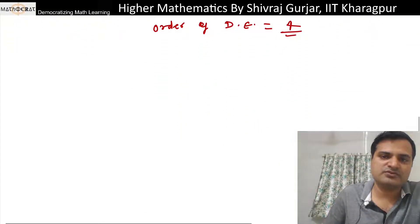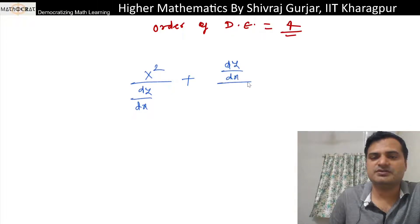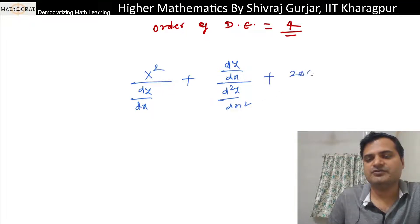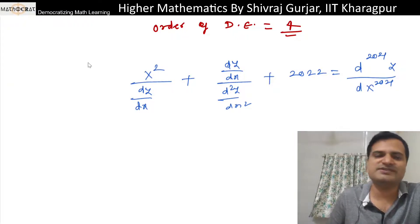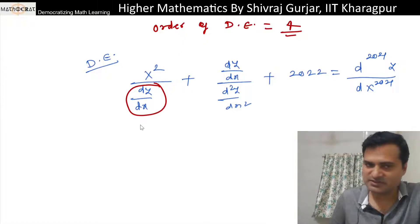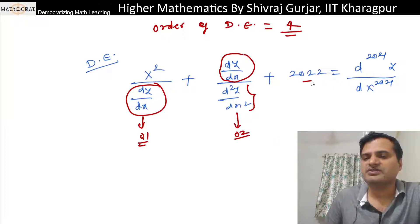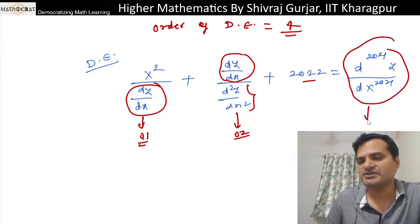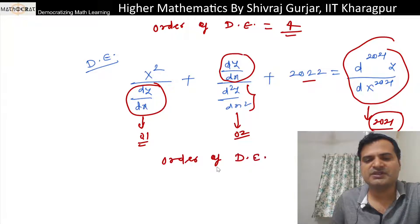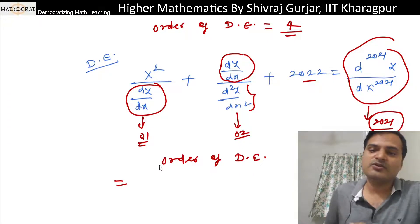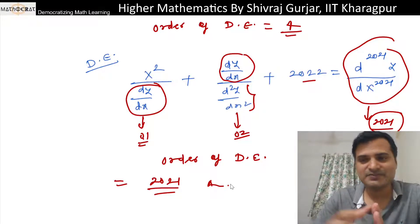Another example: x² / (dy/dx) + (dy/dx)(d²y/dx²) + 2022 = d²⁰²¹y/dx²⁰²¹. The differential operators are: dy/dx of order 1, dy/dx of order 1 again, d²y/dx² of order 2, and d²⁰²¹y/dx²⁰²¹ of order 2021. The constant term doesn't count. So the order of this differential equation is 2021 — the highest order derivative present.